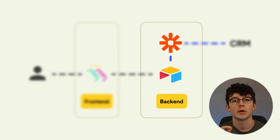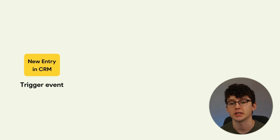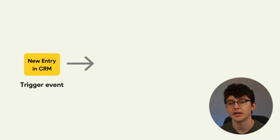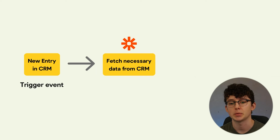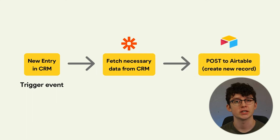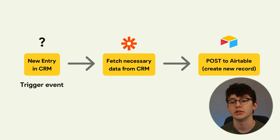Another thing we can do is outline flows and processes — think about what can happen, when it can happen, and which parties are involved. You can create a flow chart to help you keep an eye on everything. Let's create one together, focusing on the part where Airtable connects to the CRM through Zapier. It could look something like this: as a trigger, a new entry is created in our CRM; then Zapier fetches this entry; and the last step posts it into Airtable.